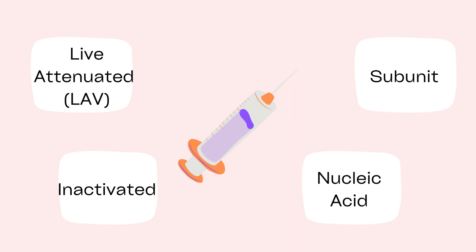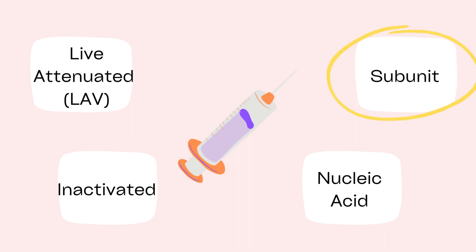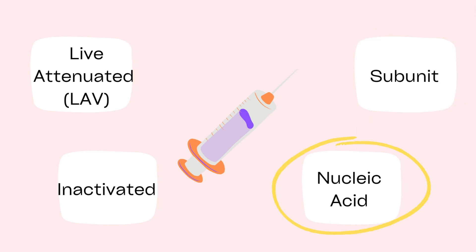Now to explore some different types of vaccines. The first type is live attenuated vaccines, which are vaccines where the pathogen has been inactivated and this triggers an immune response. An inactivated vaccine contains a killed antigen, and a subunit vaccine is just a piece of an antigen, similar to the live attenuated vaccines. The final type is nucleic acid vaccines, which contain RNA or DNA.